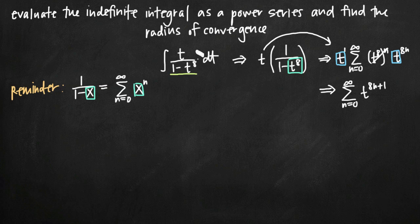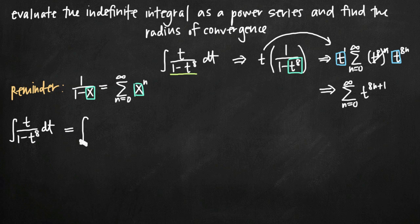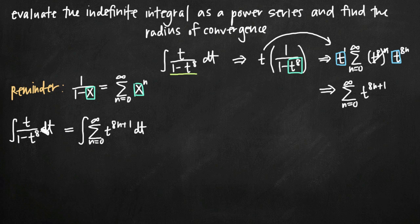Now to find the value of the integral as a power series, we say the integral of t over 1 minus t to the 8th dt. Since we found a power series representation that is exactly equal to this function, the integral of this function should equal the integral of our power series representation — that is, the integral of the sum from n equals 0 to infinity of t raised to the 8n plus 1 dt.